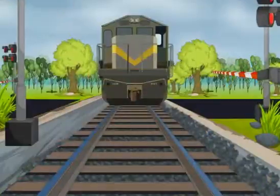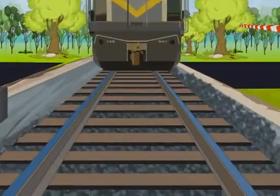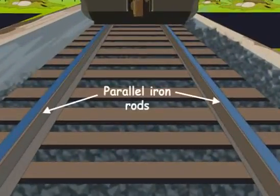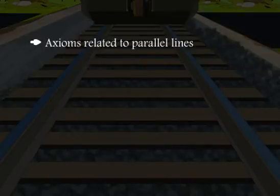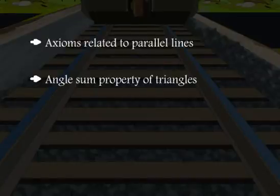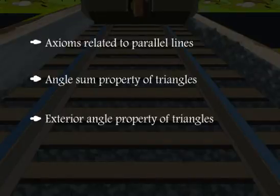One other example is the railway tracks. The tracks are made of parallel iron rods to prevent derailment. By now you have seen the uses of lines and angles in real life. Now it is time to see what has been covered in this chapter: axioms related to parallel lines, angle properties, and the exterior angle property of triangles.